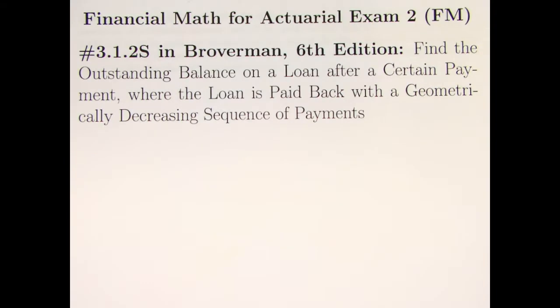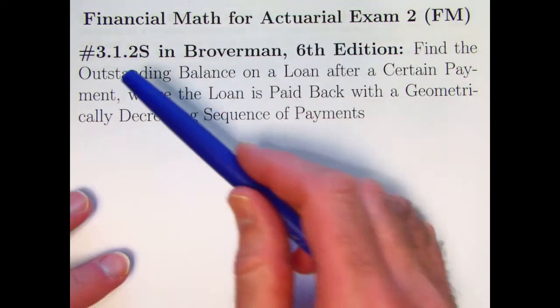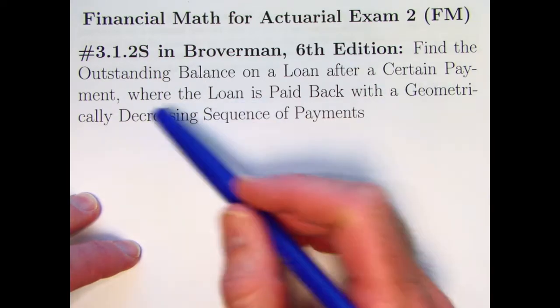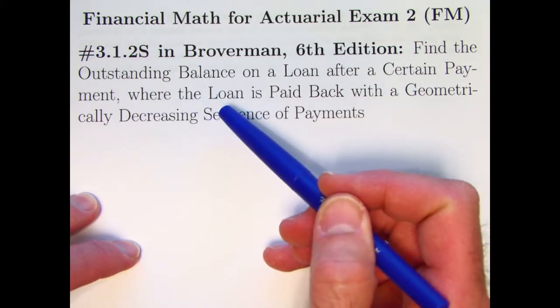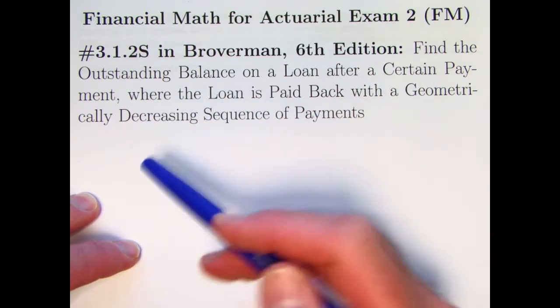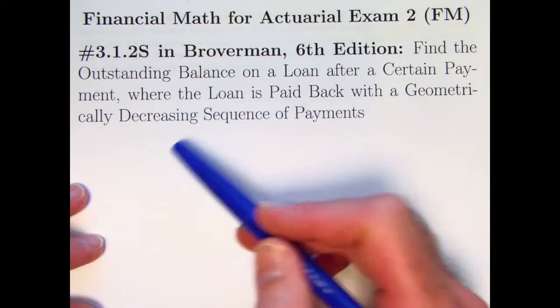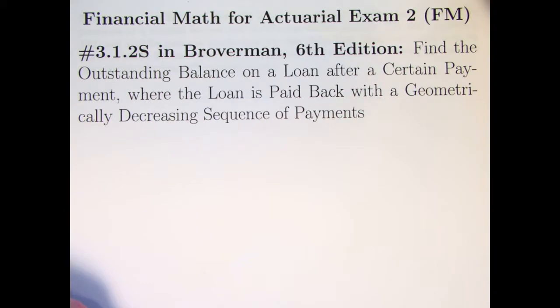Chapter 3 is about loans and paying them back. This is going to be an old actuarial exam problem, 3.1.28. It's about finding the outstanding balance on a loan after a certain payment, and there's a little wrinkle thrown in - the loan is paid back not with level payments, but with a geometrically decreasing sequence of payments.